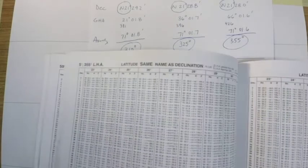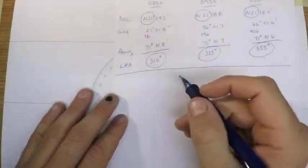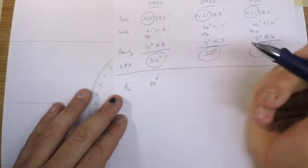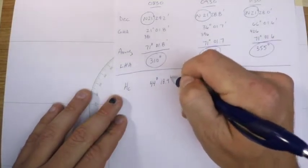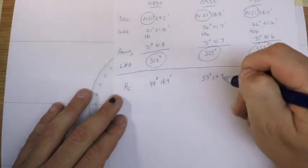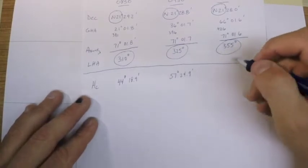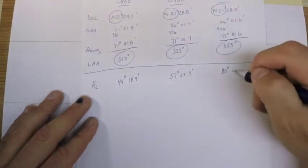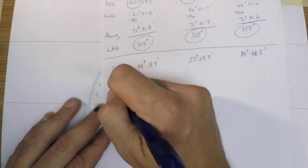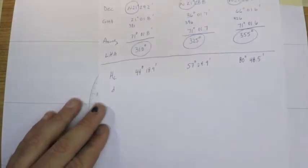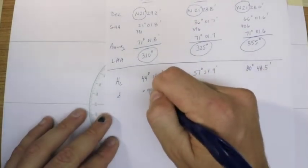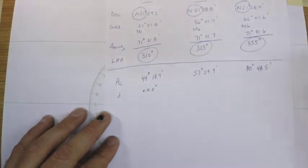I'll recreate that on my worksheet here. So my computed heights for each of these as pulled directly from the book were 44 degrees 18.9 minutes, 57 degrees 24.9 minutes, and 80 degrees 48.5 minutes. The next number that I pulled from the HO 229 was the D number, and that is a correction for this little declination hanger on there. So for this one it was a plus 20.6, a plus 21.1, and a plus 51.9.